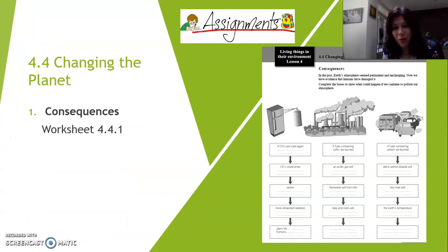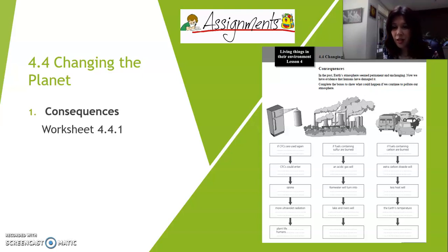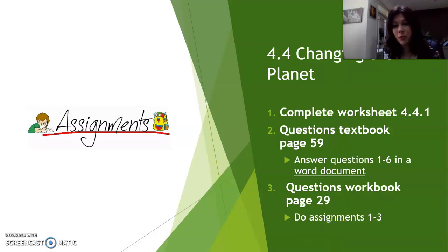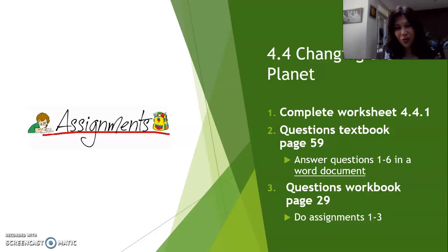I hope you copied all that down. For homework: first, there's a worksheet called Consequences Worksheet 4.4.1 — print it and answer the questions, or write the answers in a Word document and send it to your teacher. Also answer textbook questions 1–6 on page 59 in a Word document and send it to your teacher. Then do workbook page 29, assignments 1, 2, and 3 — make a photo, copy-paste it in a Word document, and send it to your teacher. Thank you very much for watching. Please re-watch this video and don't forget to write down the summary. Have a wonderful day, bye.